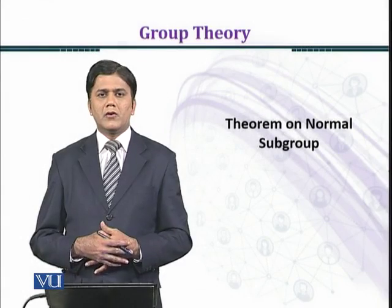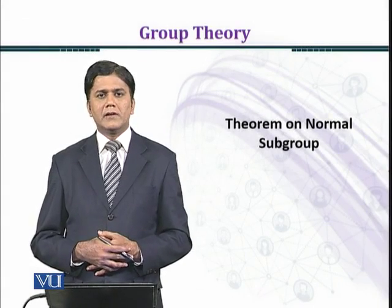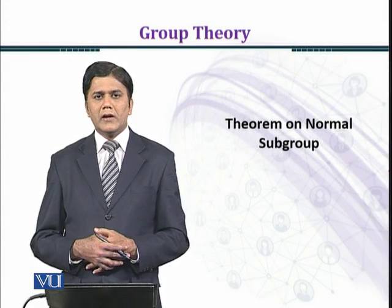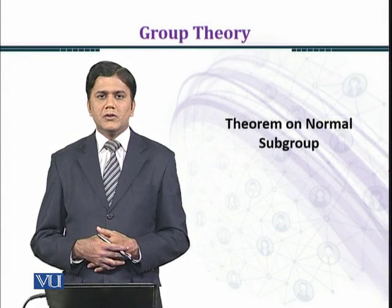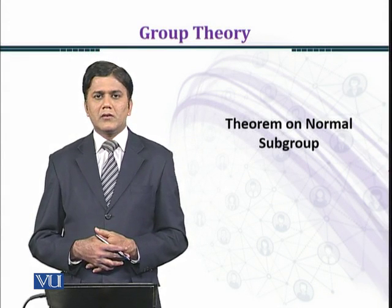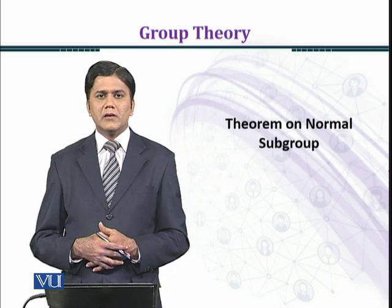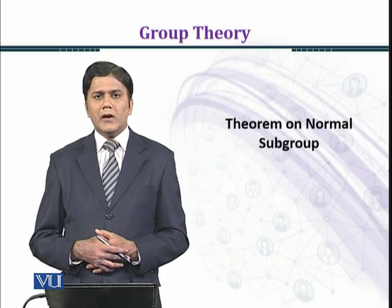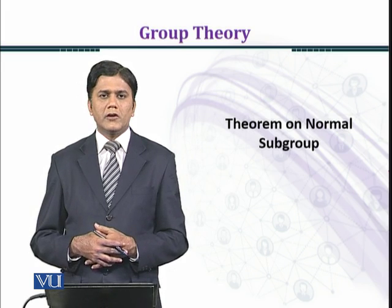In this module, we shall prove that G over N is a group, where G is a group and N is a normal subgroup of G, and it is known as the quotient group.